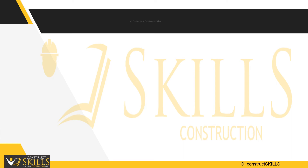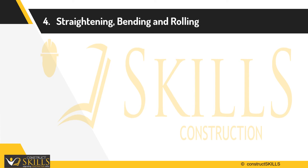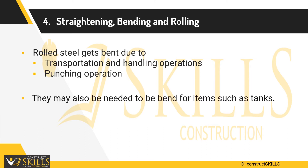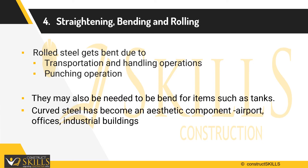Next comes the straightening, bending, and rolling process. Rolled steel gets distorted due to various reasons like the cooling process, during transportation and handling, or during punching operations. The metal straightening or leveling process is used for straightening different types of steel materials like rounds, sections, pipes, and flat products after their rolling. Sections might also need to be bent for manufacturing of tanks or for aesthetic looks.